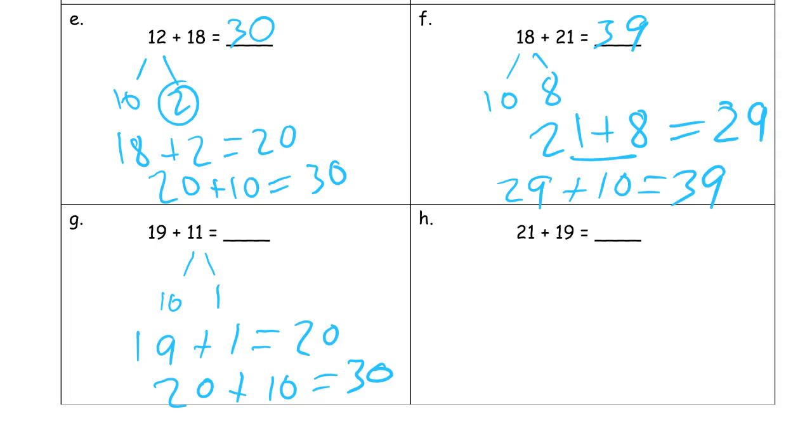And that's really a case where if you see that, you see partners to 10 in the 1s digits, that's where you want to do the 1s first. It really makes it a lot easier because then you're just adding 10s once you get that.